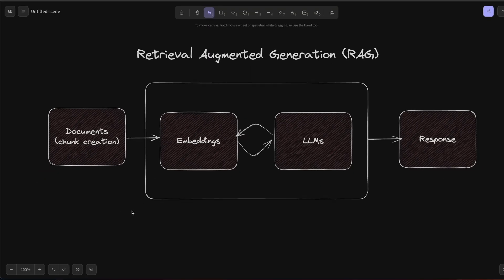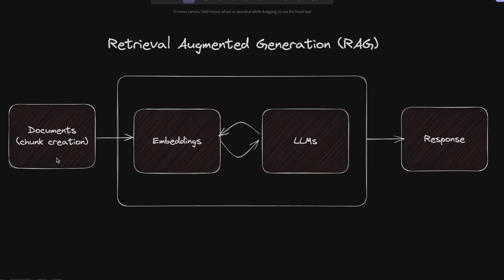If you are building a system to chat with your documents, you need to consider three different components. The first one is how do you pre-process your documents, mainly the chunking process — I have a dedicated video on that, link is going to be in the description. The second thing to consider is what type of embedding model you are using. And the last component is the LLM that you are using to generate the responses. I would personally argue that the document pre-processing step as well as the embedding model are the most important components of this pipeline.